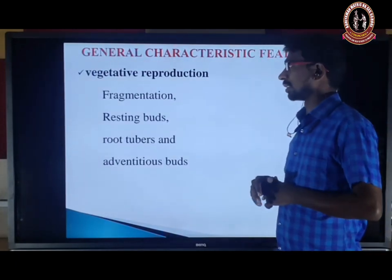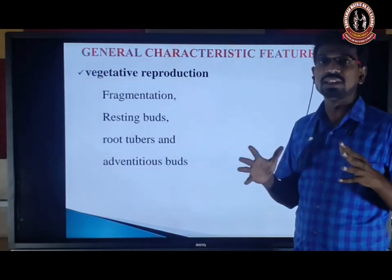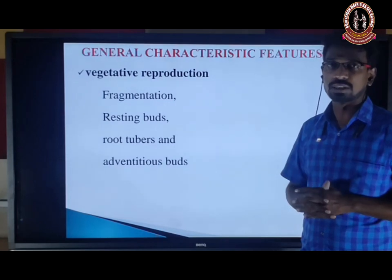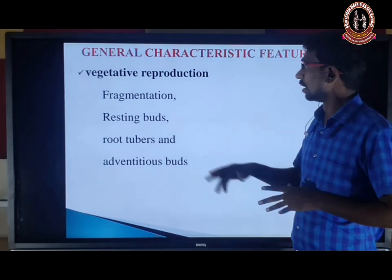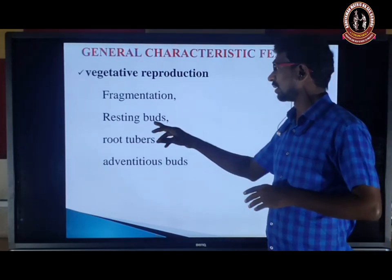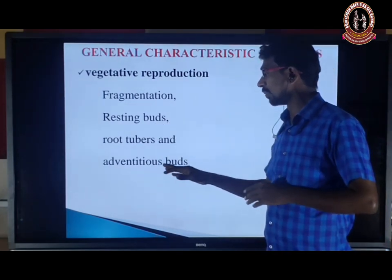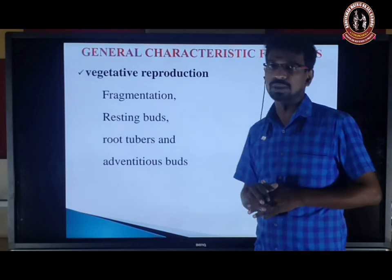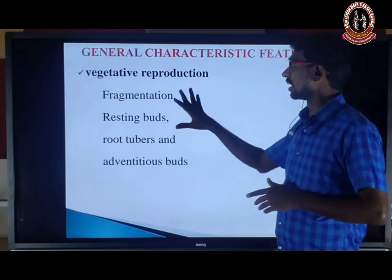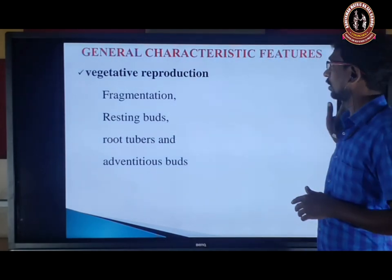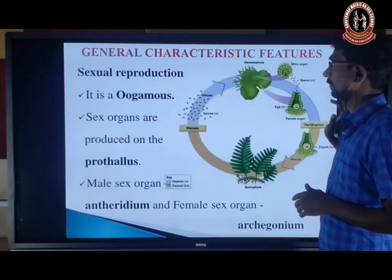Vegetative reproduction in Pteridophytes occurs by fragmentation, resting parts, stolons, and adventitious buds.